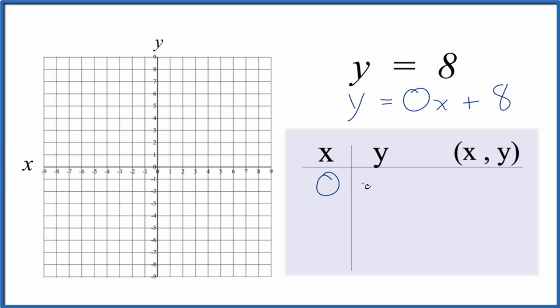Let's just start with 0. 0 times 0, that's 0, so y equals 8. We put 3 in. 0 times 3 is 0, so again, y equals 8. And in fact, any value we put in for x is going to be multiplied by 0, so we'll get y is 8.